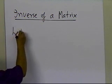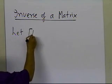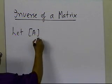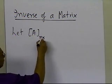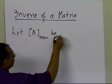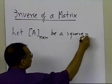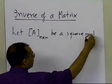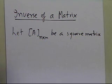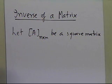The inverse of a matrix is only defined for a square matrix. So let A be a square matrix — it has n rows and n columns, the same number of rows and columns.